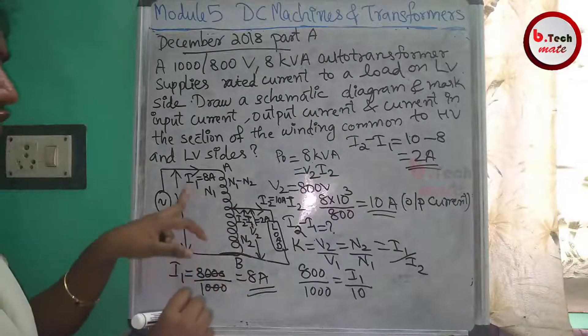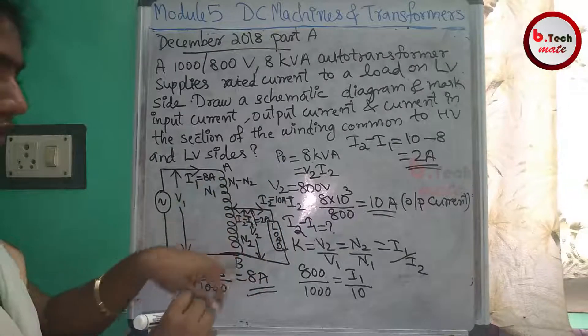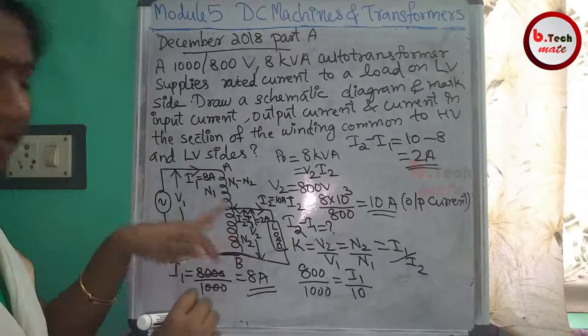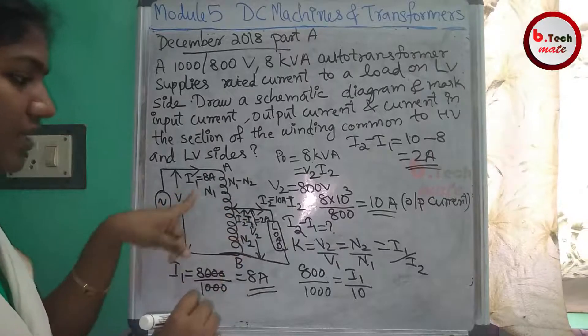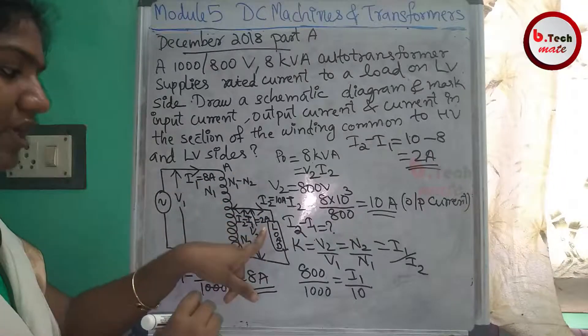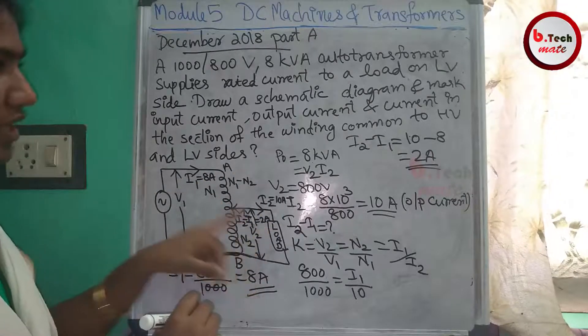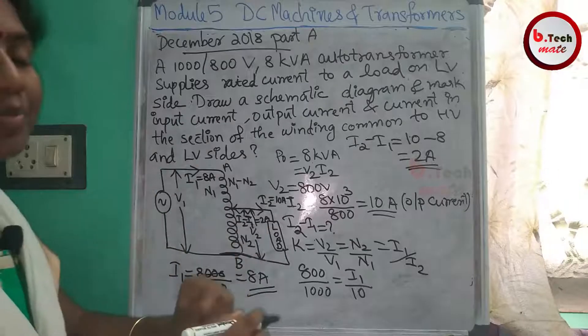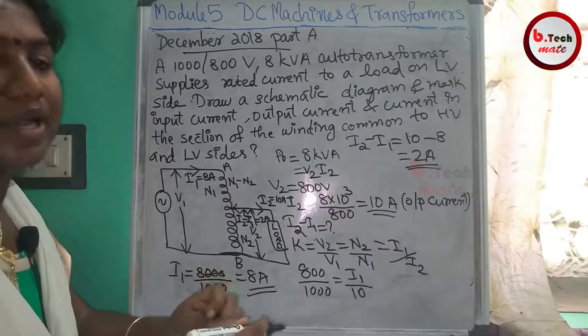Now I will mark the circuit: I1 is 8A, I2 is 10A, and I2 minus I1 is 2A. It is a simple problem involving a basic auto transformer.